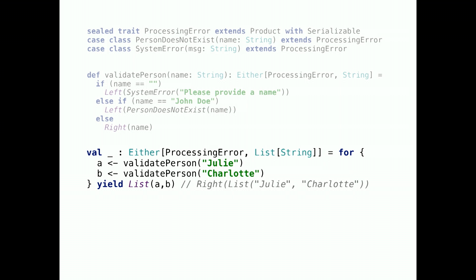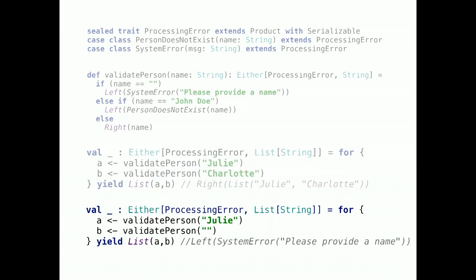So this is an example of it actually being used. In this case, we're passing in two valid names. So we're just going to end up with our array of a list containing both of these names. This is very similar to what we saw a couple slides ago. If we now pass in an invalid name, an empty string, this will return a left. So we'll stop processing and we'll end up with our left of system error.